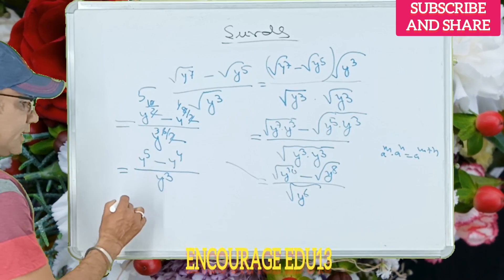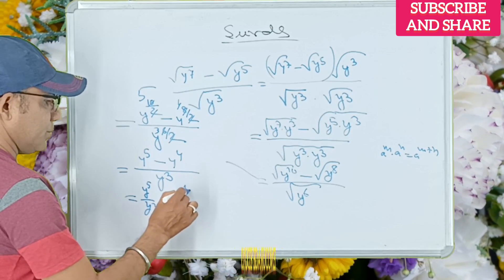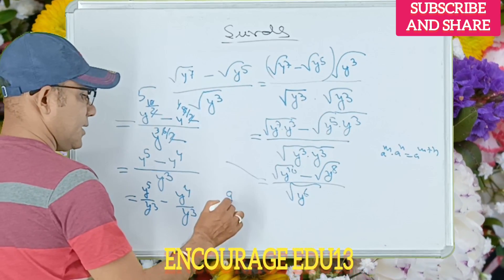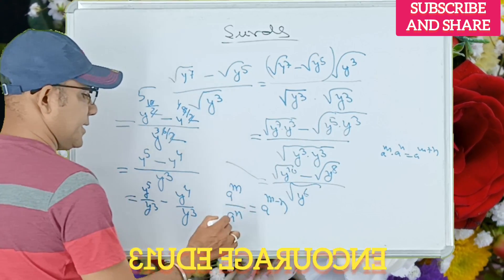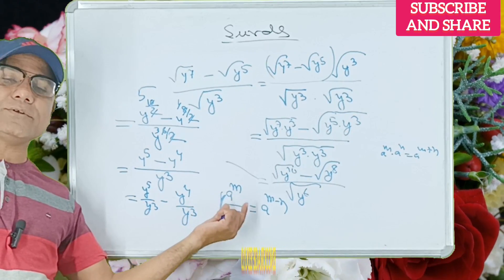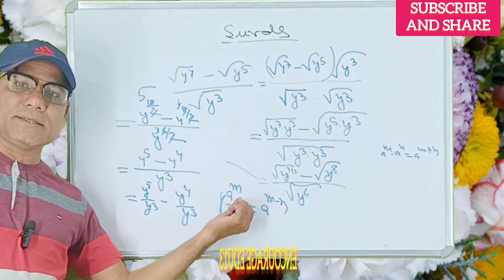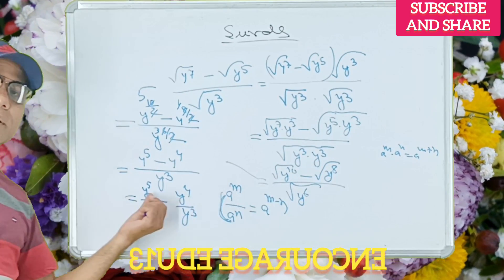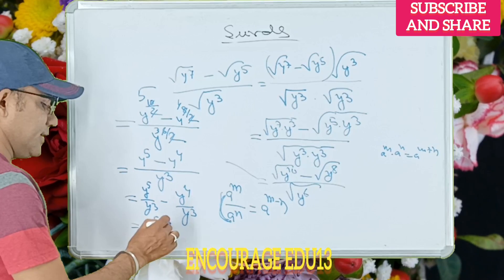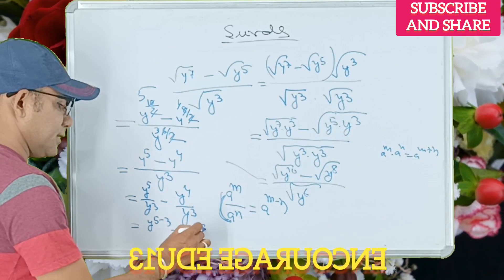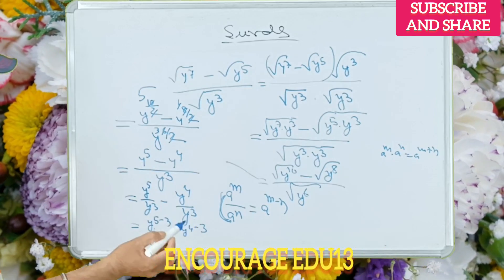I have to write a question: y to the power 5 divided by y cubed, minus y to the power 4 divided by y cubed. Using a to the power m divided by a to the power n equals a to the power m minus n — the base is the same, so we divide by subtracting exponents. Which is equal to y to the power 5 minus 3, minus y to the power 4 minus 3.